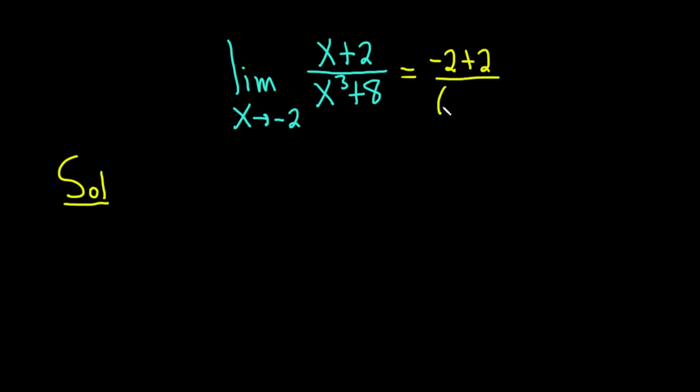So the first thing you want to do in problems like this is take the number, in this case negative 2, and put it everywhere you see an x. When you do that, you get negative 2 plus 2 over negative 2 cubed plus 8. This is equal to 0 over 0, which is no good.